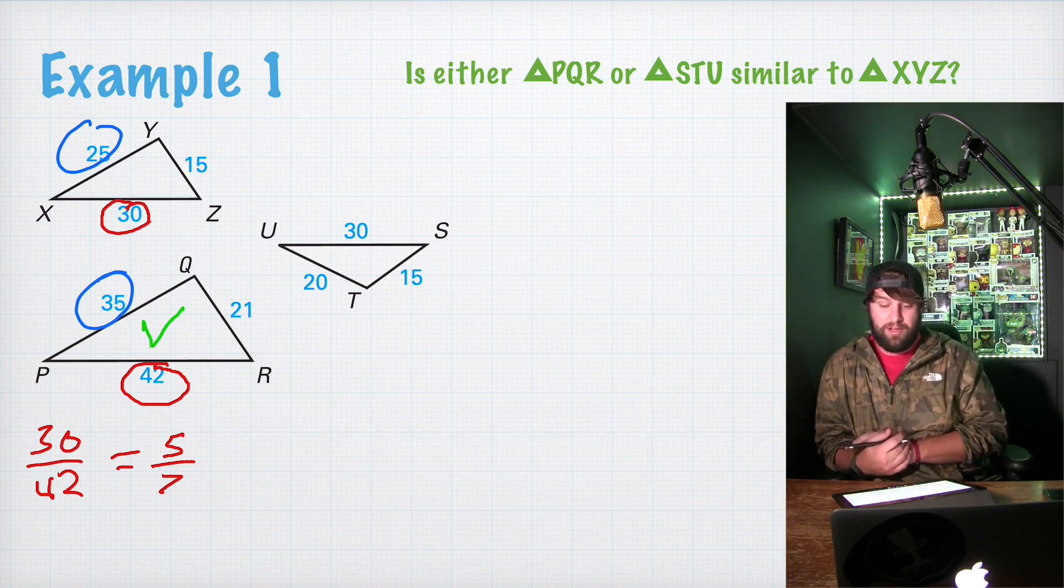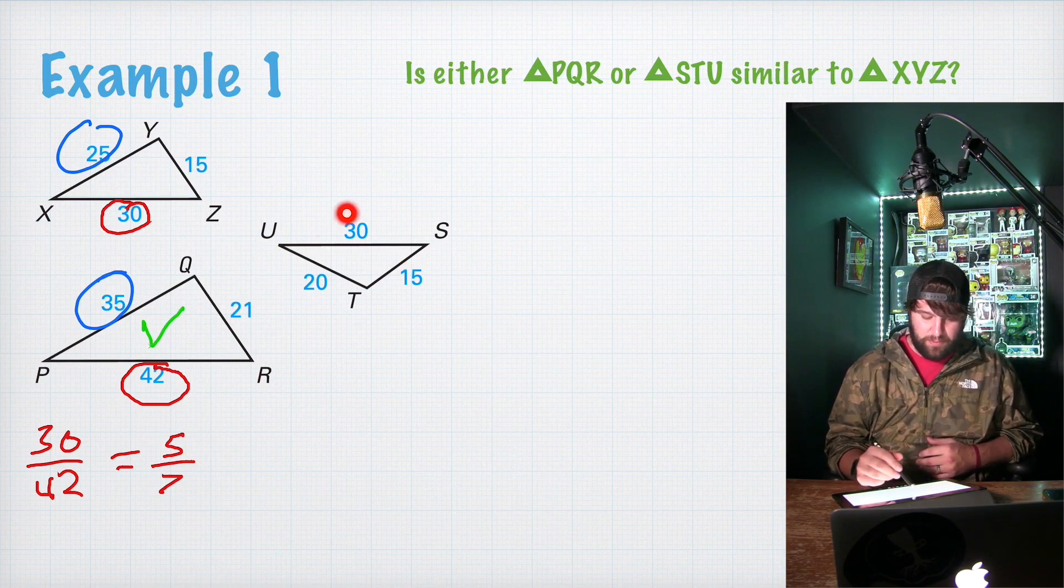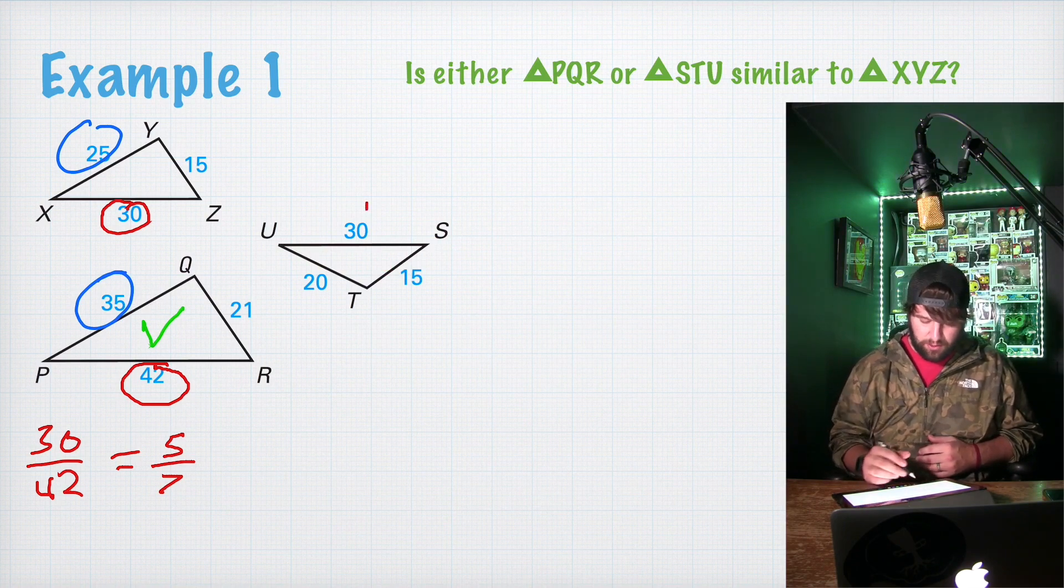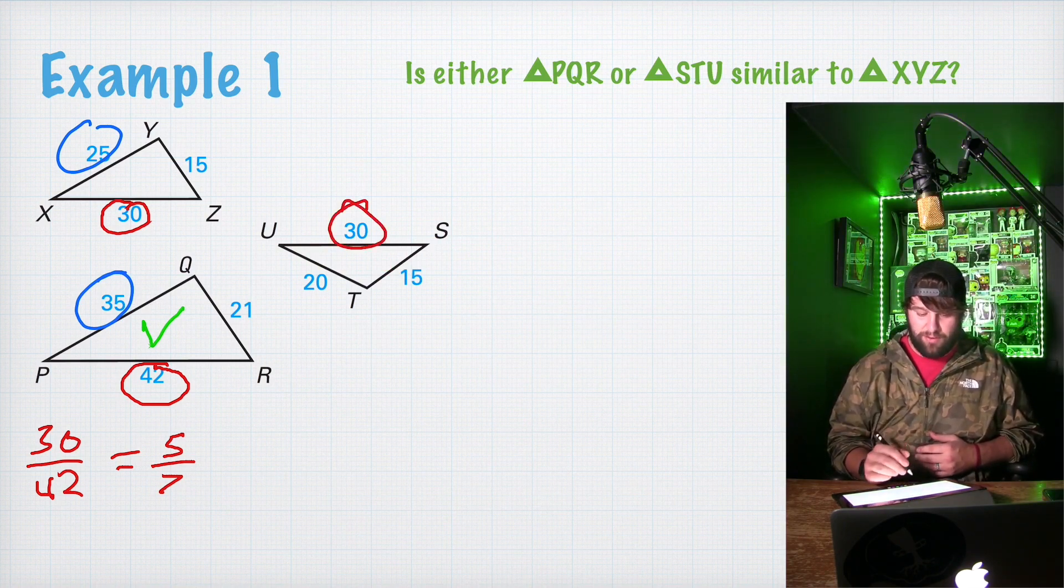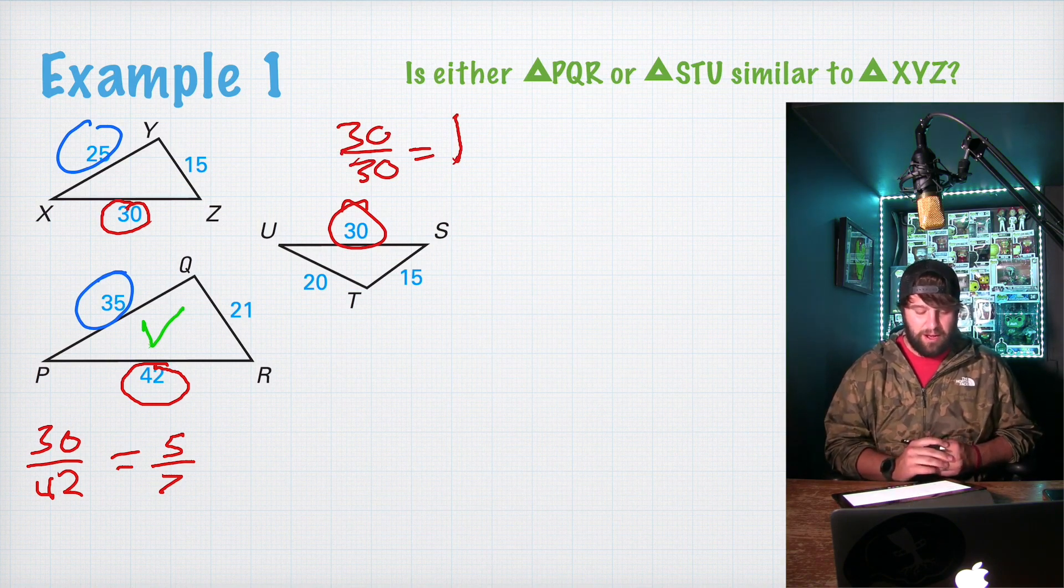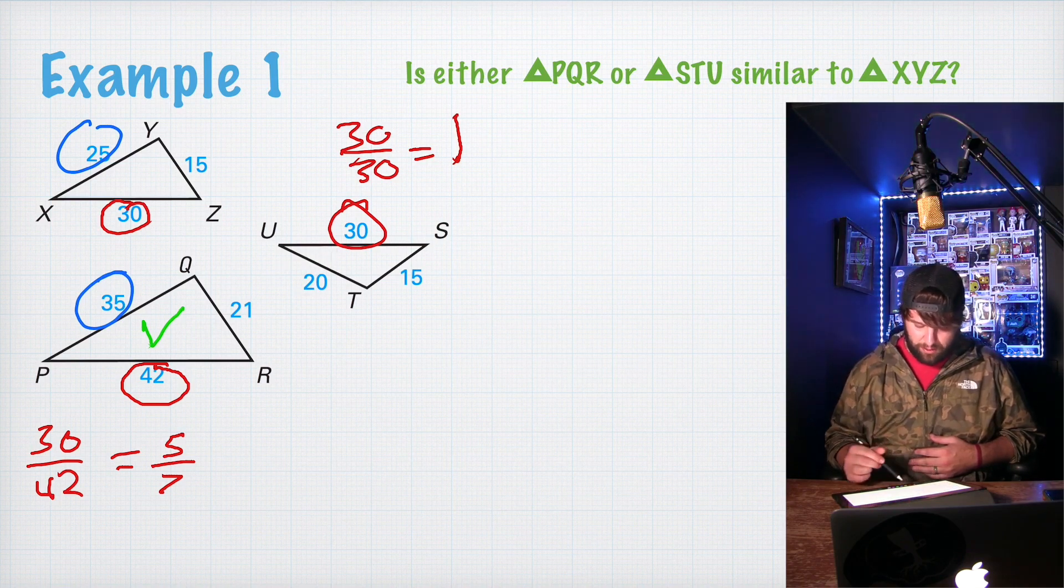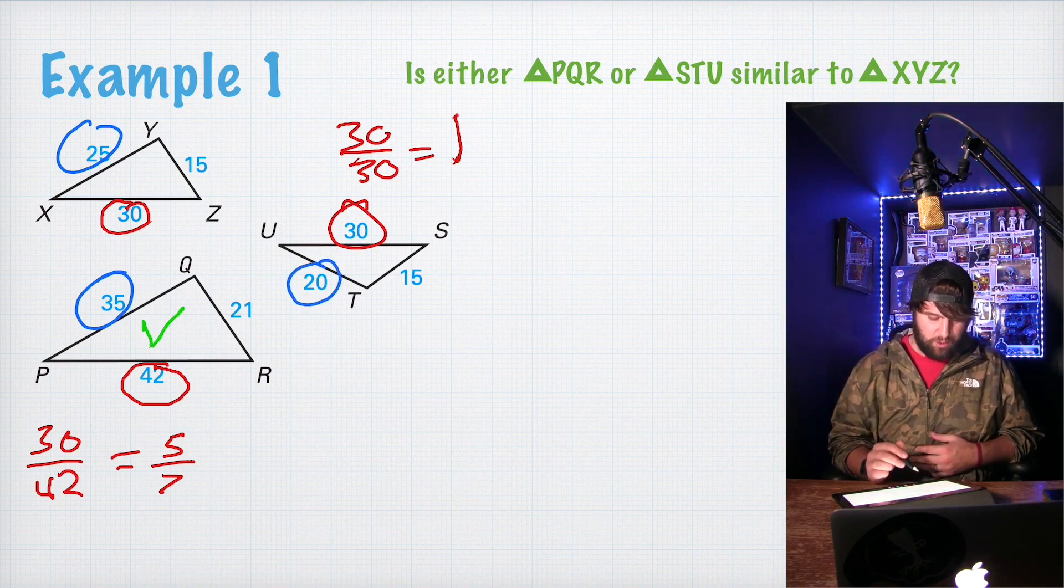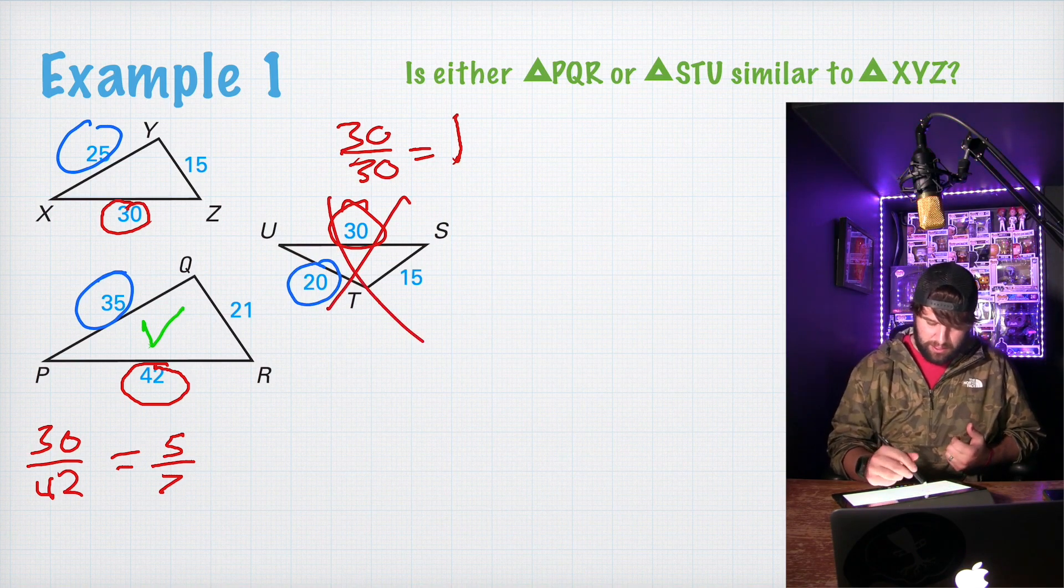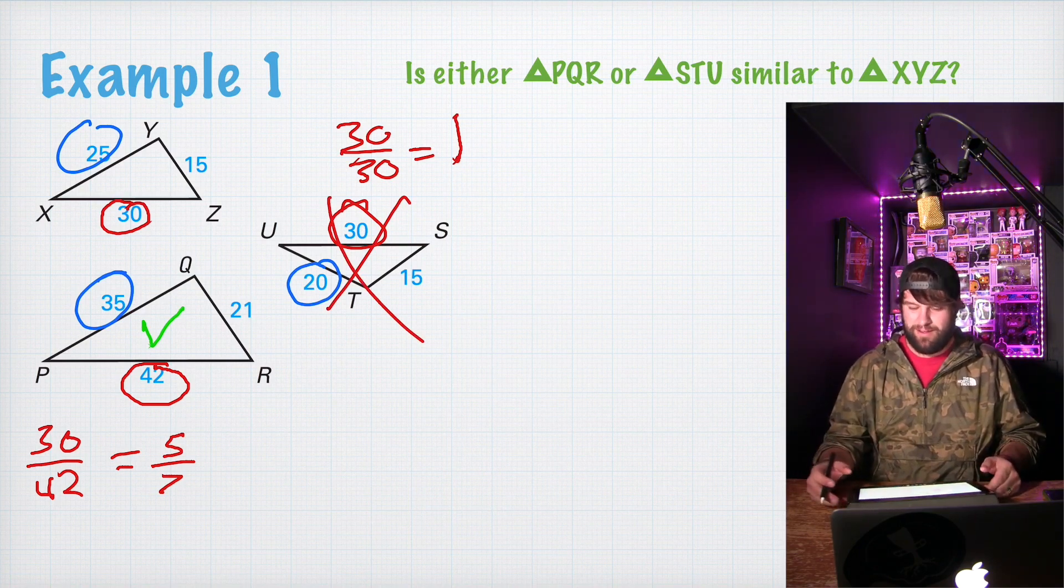PQR is similar to XYZ. Well, let's check STU. So the largest side of STU is 30 over 30, which would be equal to 1. All the sides would have to be equal to 1. Well, if we pick the middle side of this triangle, 20 over 25 is not going to be equal to 1. So this triangle is not similar. That's all there is to that. Let's go ahead and keep going.